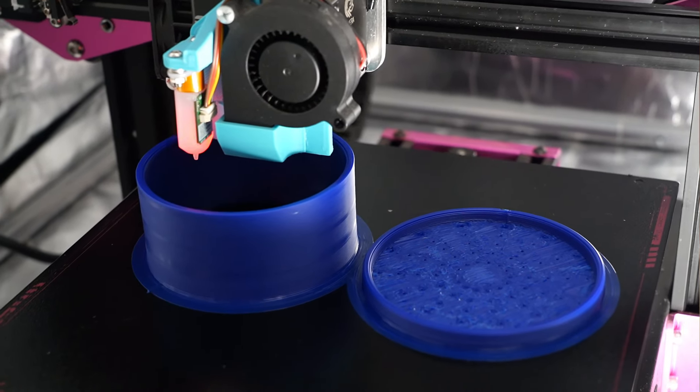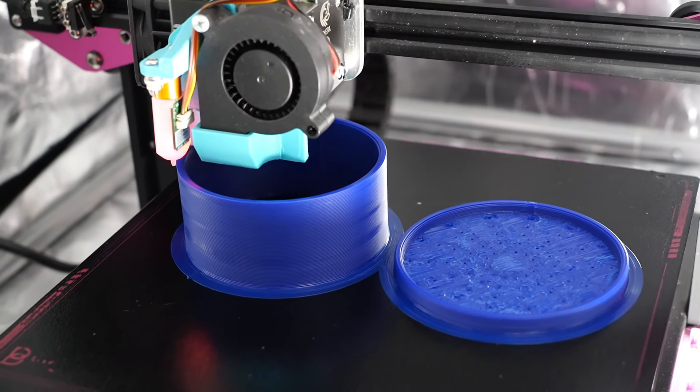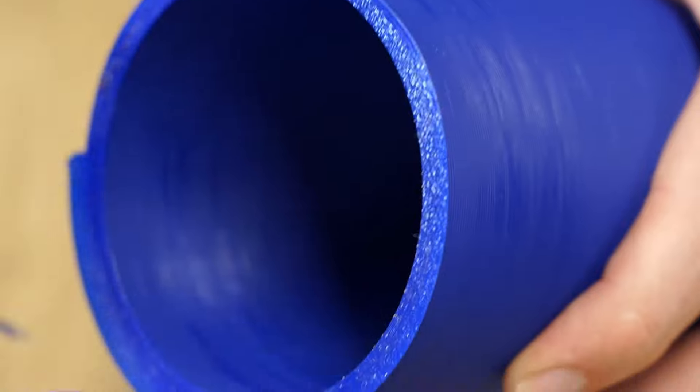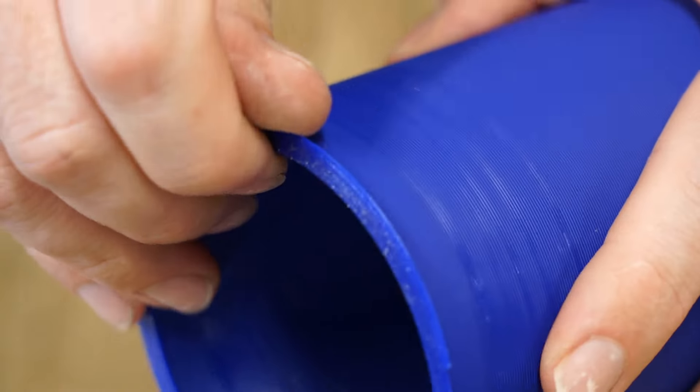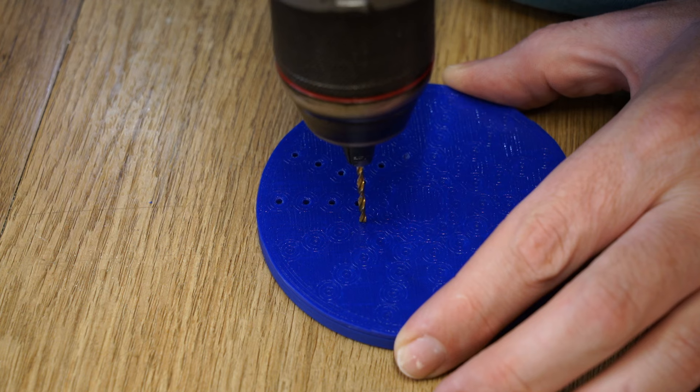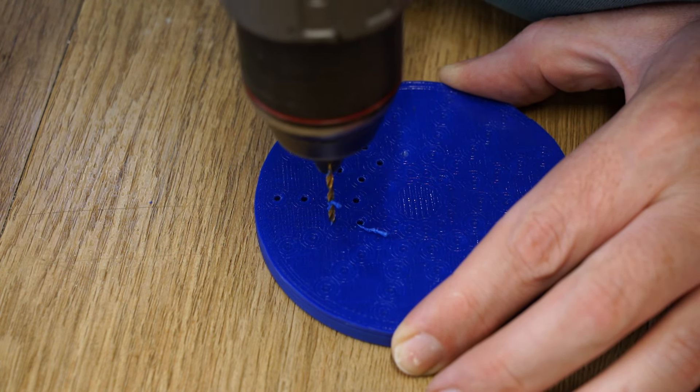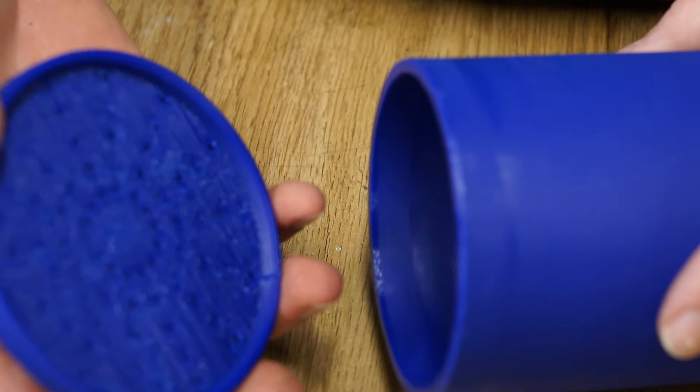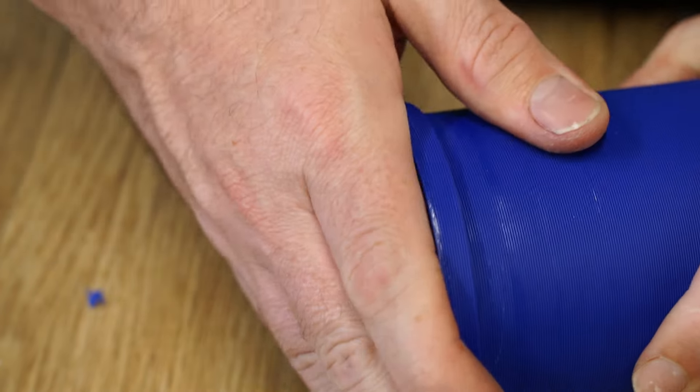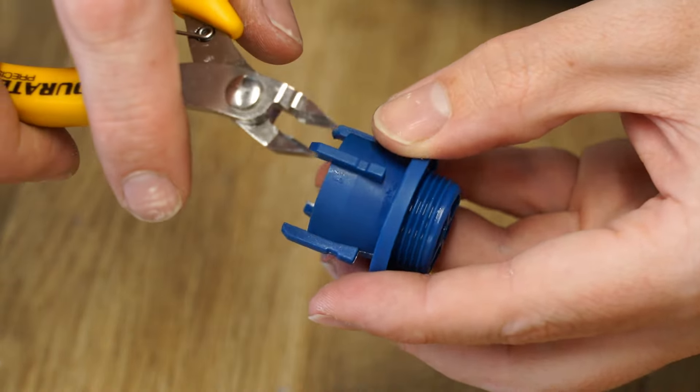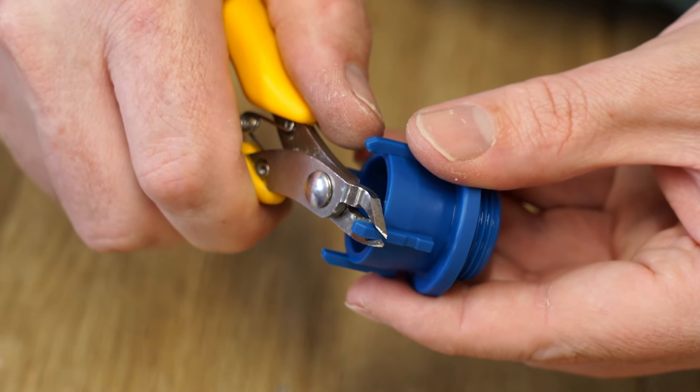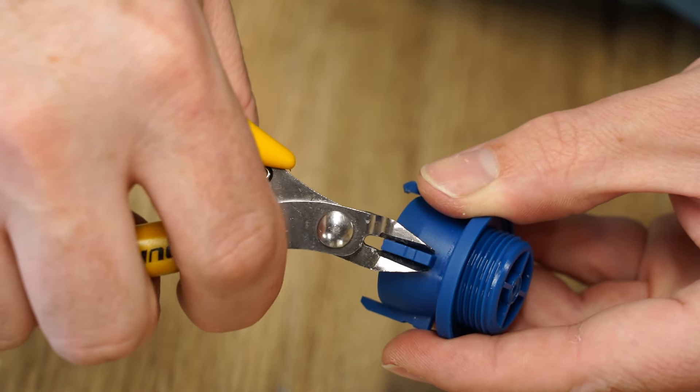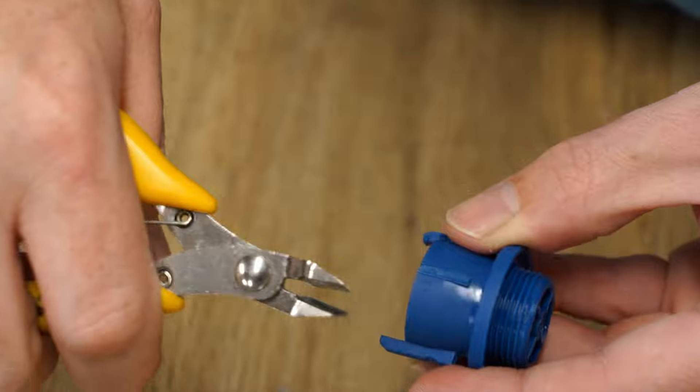To fix this oil mist issue I 3D printed a filter housing using PETG filament. After printing I removed the extra build material and drilled out the holes in the lid. I'll modify the original vent cap so I can glue it using silicon into my filter housing.